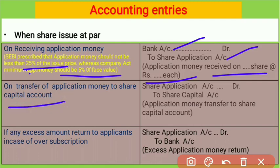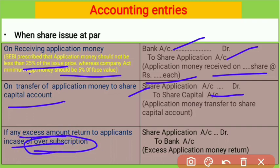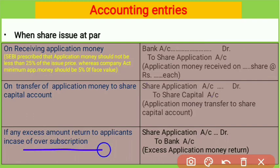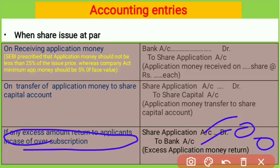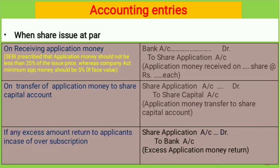If any excess amount is to be returned to applicants in case of over-subscription, the entry is: Share Application Account debit to Bank Account for the return amount. After application money receipt, transfer, and excess return entries are done, the allotment stage begins.